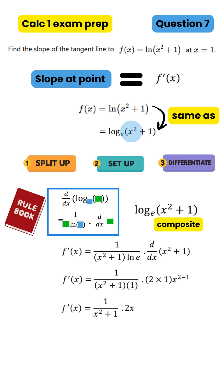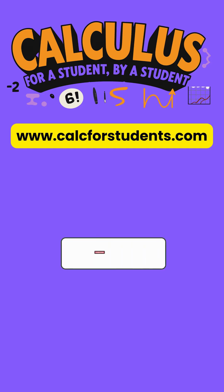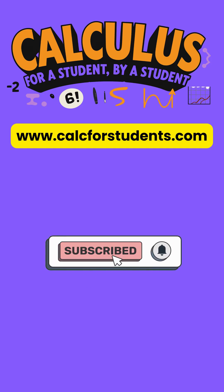After applying the chain rule, simplify, then substitute x equals 1 to get the slope of the tangent at x equals 1. If you love struggling with calculus, don't like and subscribe.